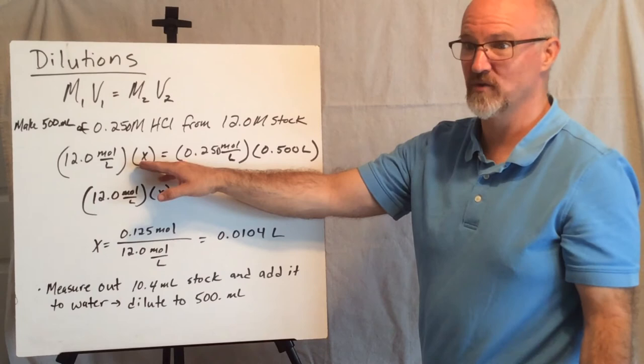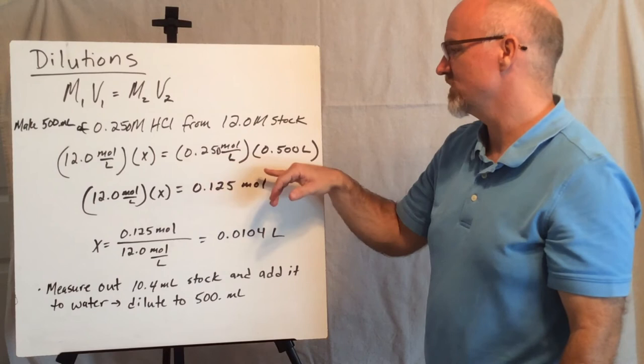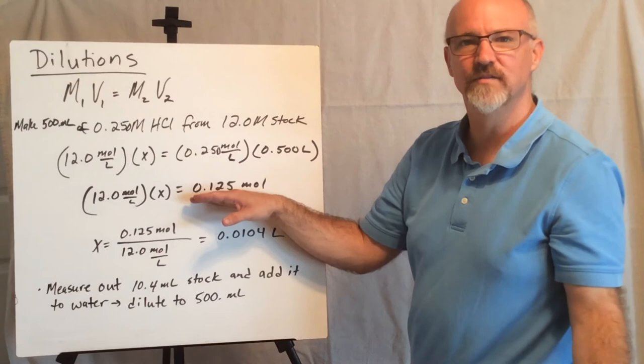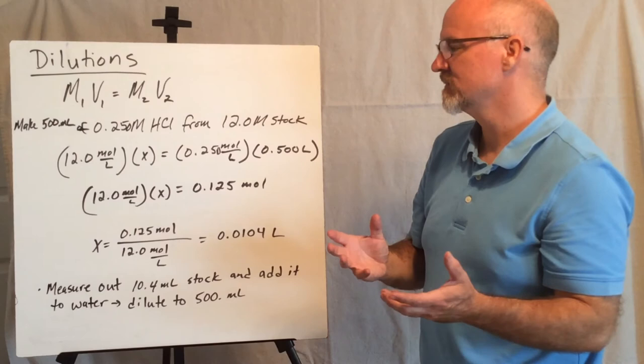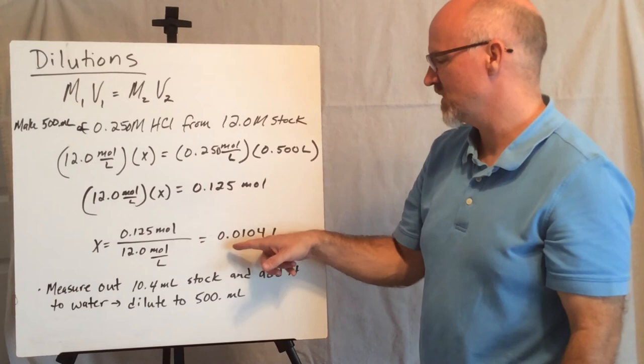Well, I'm starting with 12 molar. How much of that, what volume will I need to have the right number of moles? Well, the other side of the equation is going to tell me. So I'm trying to make a quarter molar solution, moles per liter, and a half liter of it. Notice the liters will cancel. And I only need 0.125 moles of the HCl in the mix. Since I'm starting with 12 moles per liter, do a little algebra, I figure out I only need 10.4 milliliters of that stock solution.